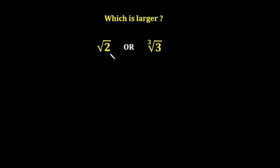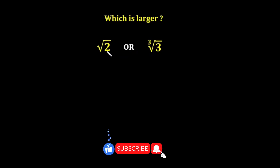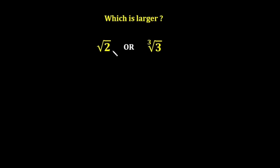Hello friends. In this video we are given two numbers: the square root of 2 and the cube root of 3, and we have to find out which number is larger. First of all, when I see both the numbers, both are in radical form, so we change them into exponential form. The square root of 2 can be written as 2 raised to the power 1 over 2, and the cube root of 3 can be written as 3 raised to the power 1 over 3.